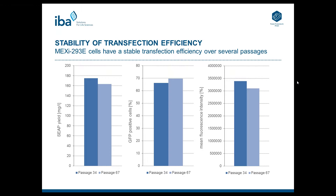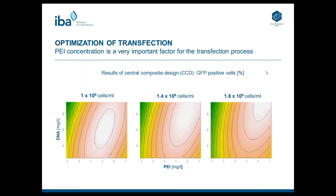The mean generation time of the cell line is 25 hours, and the maximum cell density reached is 15 million cells per milliliter without any feeds — just a simple batch cultivation. Another very important factor is the stability of transfection efficiency. We compared transfection efficiency at a very low passage of 34 versus passage 67, using secreted alkaline phosphatase and GFP. The yield of purified alkaline phosphatase and the GFP mean fluorescence intensity were comparable between both experiments, showing it is not a problem to use the cells for 30 additional passages and still get the same transfection results.